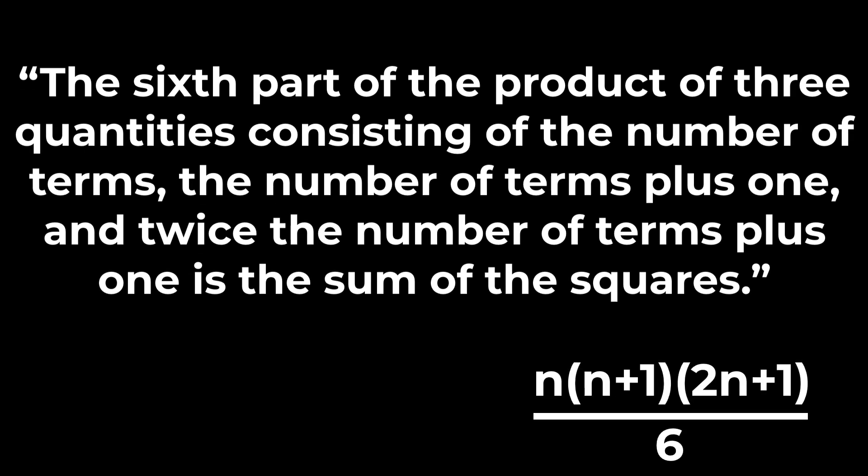But I'll put up the equation as well, so you can see what's going on here. The sixth part, that's the six on the bottom, of the product of three quantities consisting of the number of terms, that's n, the number of terms plus one, that's n plus one, and twice the number of terms plus one is the sum of the squares. So this is a word version of that same mathematical formula. And at the time, this was the way that people did mathematics. We didn't have this kind of algebraic notation that we use today.